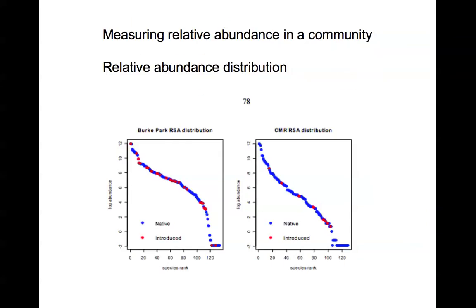So how do we measure relative abundance in a community? On the y-axis we have the abundance across a number of plots that were measured, all of the same type. On the x-axis we have the rank. Each dot in this graphic corresponds to a species within that community. First we calculate how abundant the species is, and then we rank it against all other species in that community.